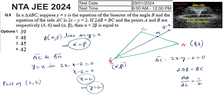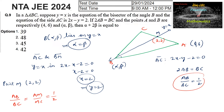Now since we know points A and M, we can find point C using the section formula. Since y = x is the angle bisector of angle B, by the angle bisector theorem AM upon MC equals AB upon BC = 1/2. So M divides AC internally in the ratio 1:2.